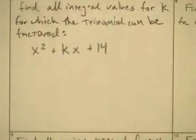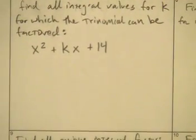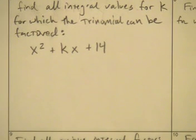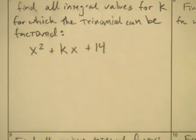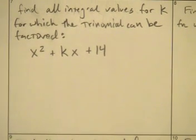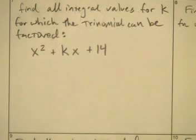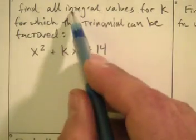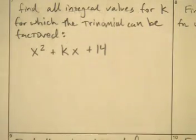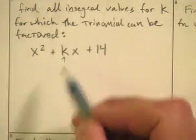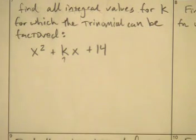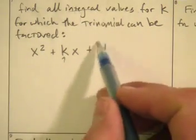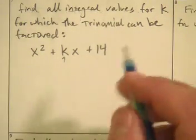Let's look at another type of problem: find all integral values for k for which the trinomial can be factored. Integral values means integer values. We're trying to figure out what numbers could go in there — there's only a finite handful. They are all the possible sums of the factor pairs of 14.